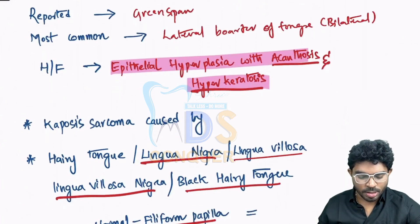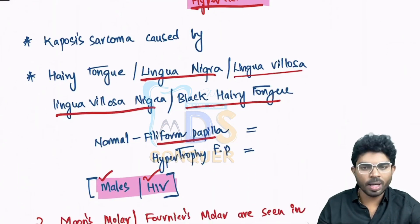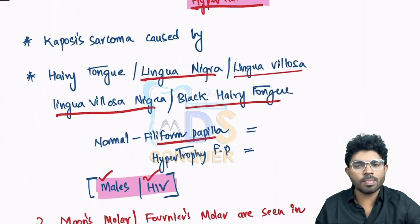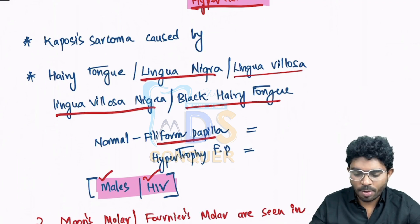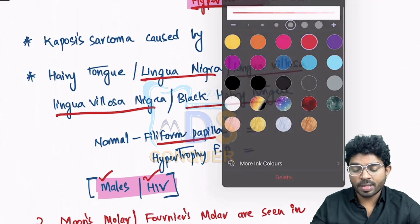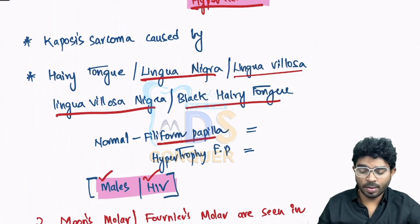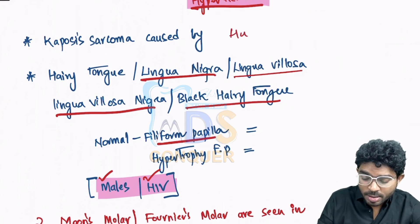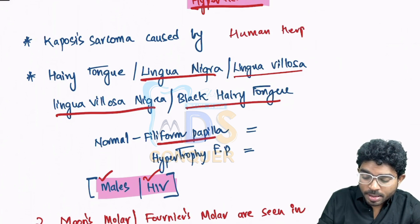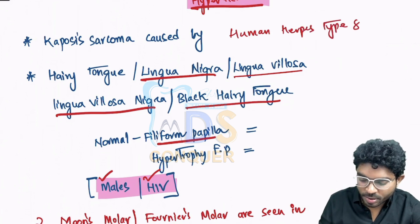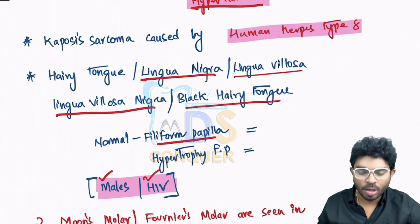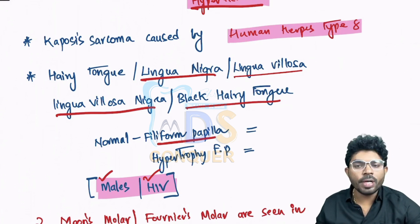The next question is Kaposi's sarcoma, which is most commonly associated with HIV positive individuals. It is basically caused by which virus? The answer is Human Herpes Type 8 — a very frequently asked question. Now, a few points related to black hairy tongue or hairy tongue.